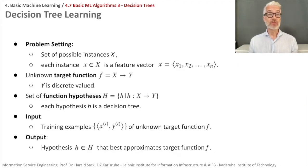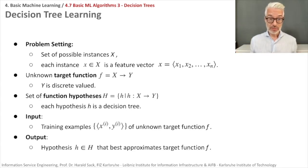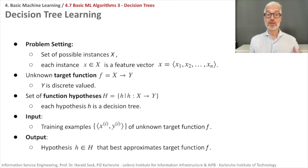Let's formalize this problem. We have a set of possible instances X, and for each instance x ∈ X, which is a feature vector x₁ to xₙ, we have an unknown target function that maps towards a discrete variable Y which we want to predict. We have a set of function hypotheses, and each hypothesis — depending on how we decide to use a specific feature — corresponds to a decision tree.